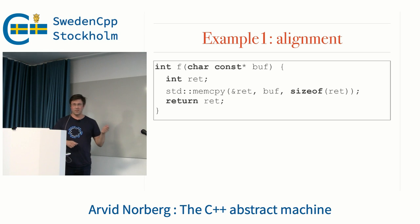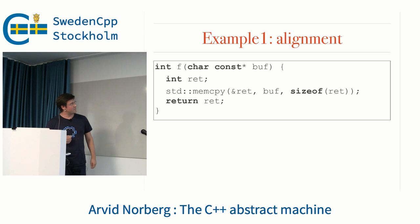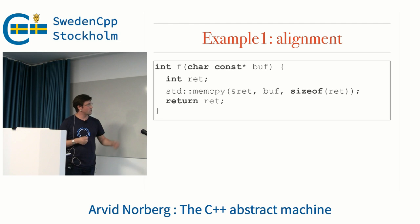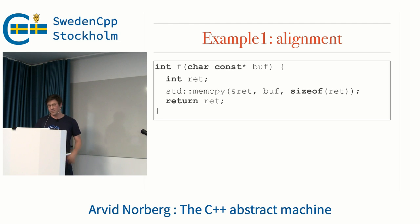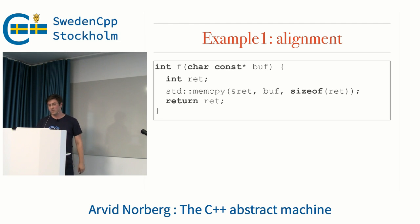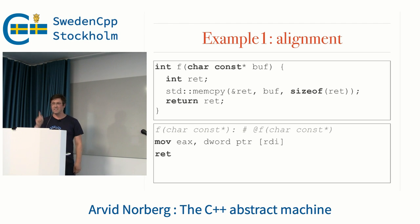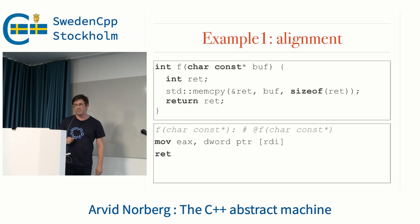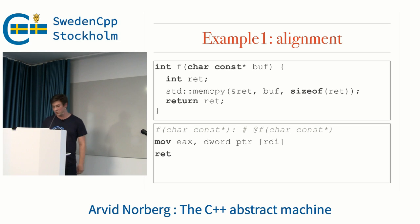The abstract machine has alignment requirements, whether your concrete machine does or not might not be relevant. This is how you copy an unaligned int into an actual int — you use memcpy. You're telling the compiler that this might be unaligned by using memcpy, and your compiler will know that on x86 it can use a move instruction for that, and it will turn it into a move.